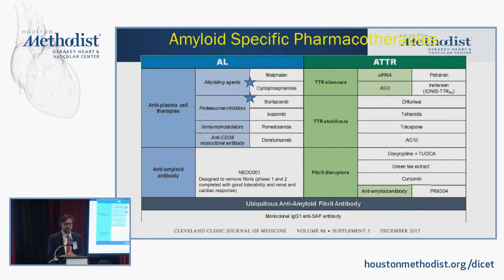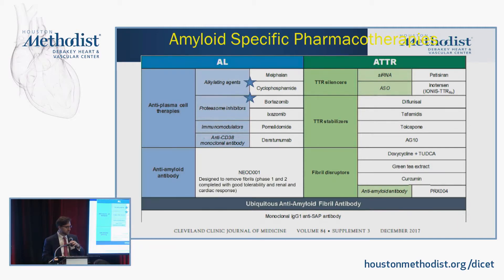For AL amyloid treatment, novel therapies in the past decade — particularly bortezomib and other proteasome inhibitors — have really increased survival. Some patients still need a heart transplant; we've successfully transplanted about 15 patients with AL amyloid, given them ongoing chemotherapy, followed by a stem cell transplant about a year after heart transplant to try to eradicate the disease. These patients so far have had survival not inferior to regular transplant patients.